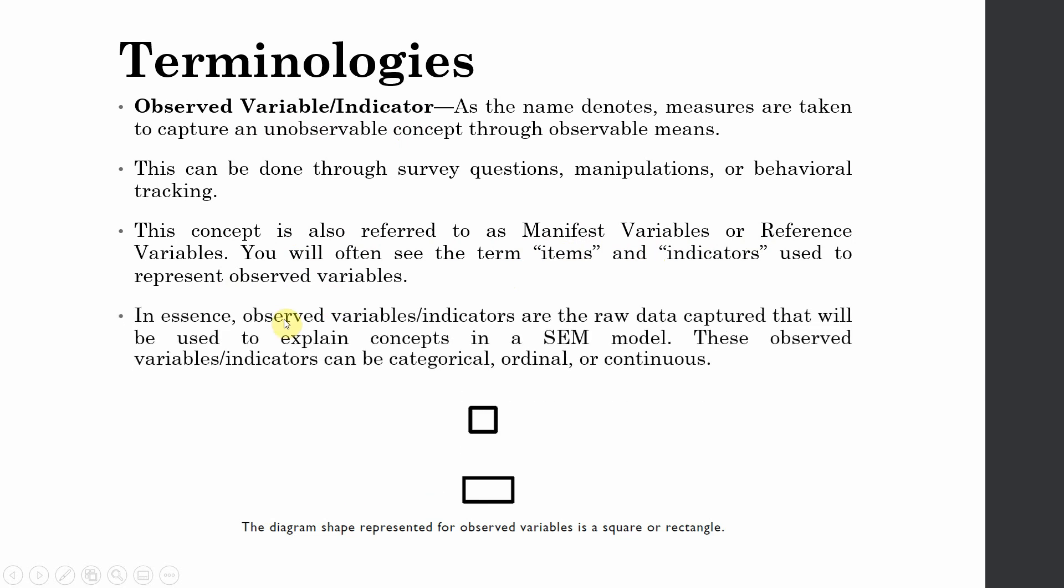Observed variables or indicators are the raw data capture that will be used to explain the concepts in SEM model. These observed variables or indicators can be categorical, ordinal, or continuous. You show them in AMOS using a square or rectangle.